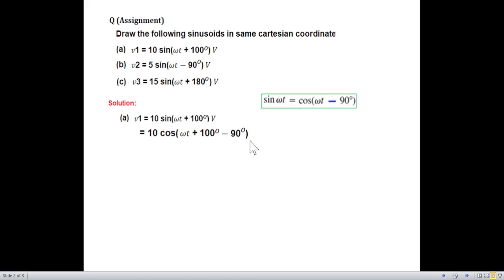Subtracting minus 90 and then solving, we get this to be 10 cosine omega t plus 10 degrees. And now we know how to write from cosine to phasor form. We take the magnitude and the angle. So this angle 10 degrees. So this is in the phasor form. And now we can easily plot.